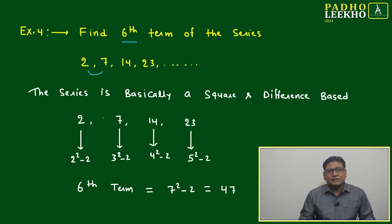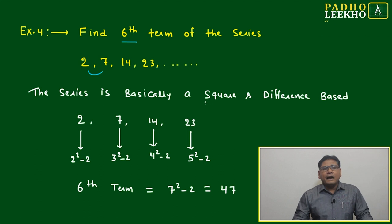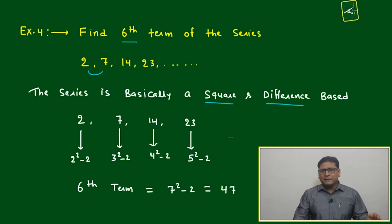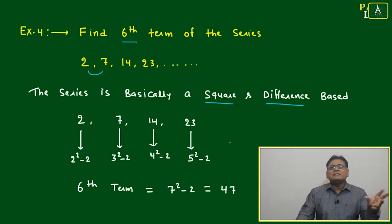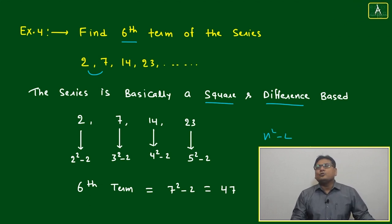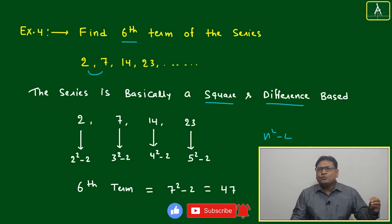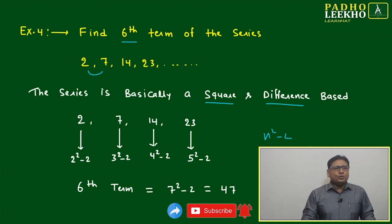The series is basically a square and a difference based. We made some relation like n² - 2, n² - 1, n² + 1, something we can make. For example, 2 we can write as 2² - 2. It is perfectly right, but this should be followed by the next term also.